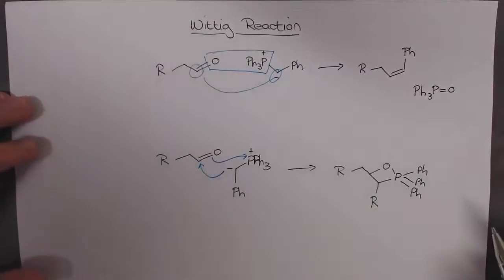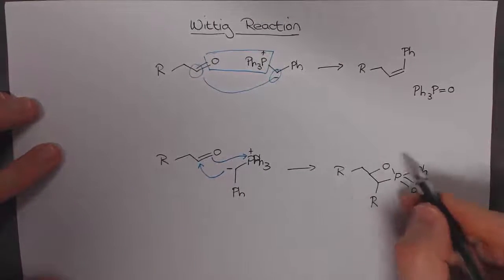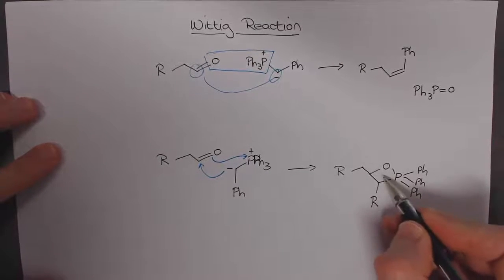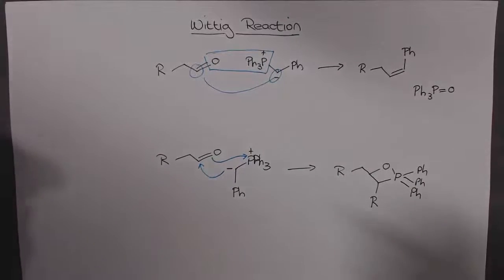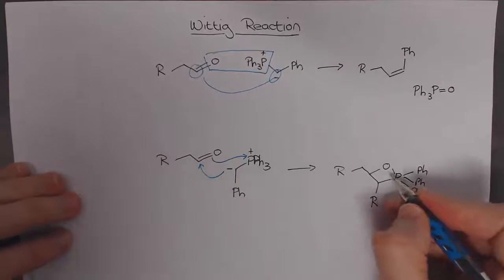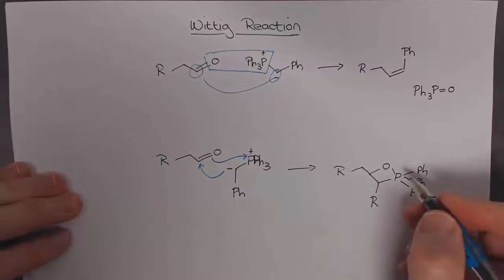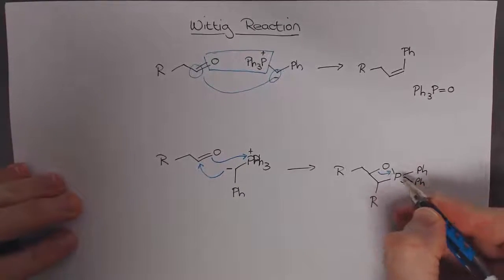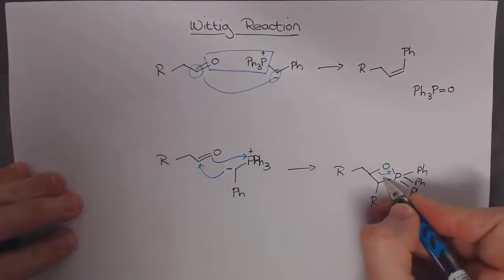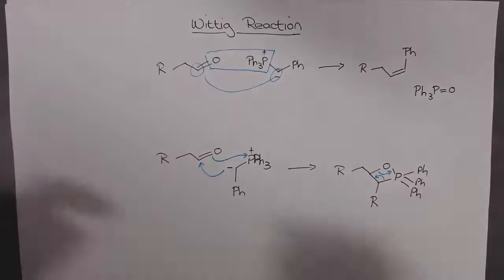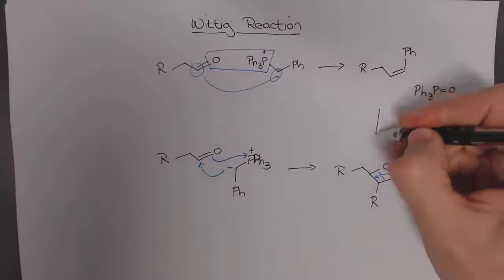This is called the oxyphosphatane. It's a four-membered ring transition state which very rapidly breaks down to give the product. It happens in one step. These electrons go in here to form triphenylphosphine oxide and these ones break to form a carbon-carbon double bond that we have in the product.